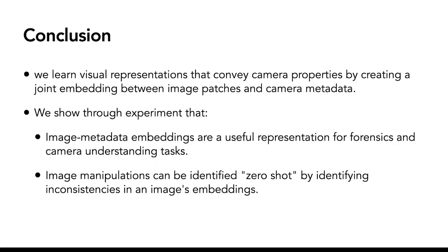In conclusion, we learned visual representations that convey camera properties by creating joint embeddings between image patches and the camera metadata. We showed through experiments that the image metadata embeddings are useful representation for forensics and camera understanding tasks, and that image manipulations can be identified zero-shot by identifying the inconsistencies in an image's embeddings.